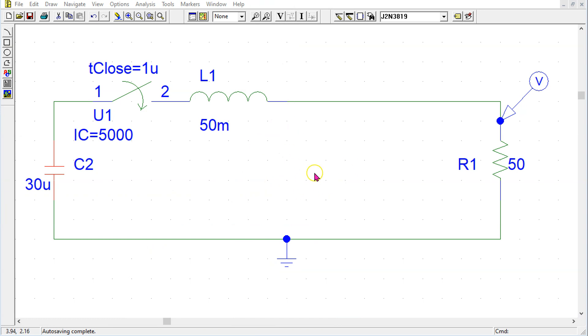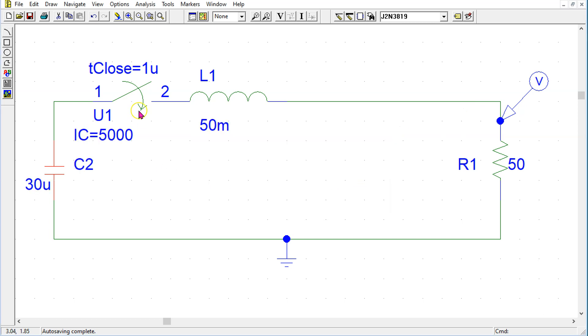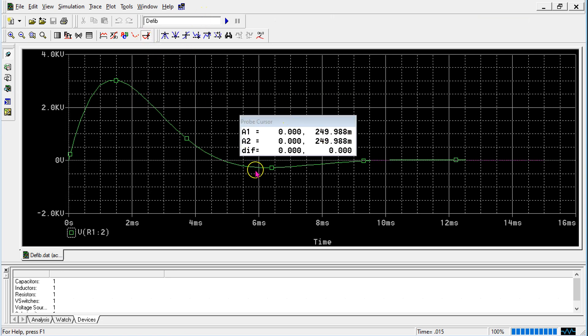This is the same circuit in PSpice. We can double click the capacitor and define the initial condition. We can simulate this circuit and enable the cursor and we can see that we obtain the same waveform as before with a peak of around 3000 volts.